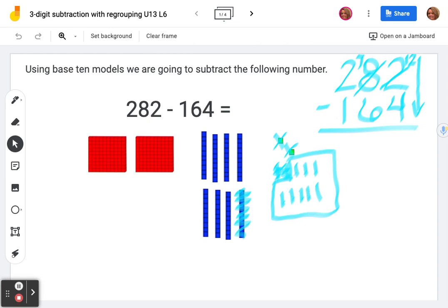Then we move to our tens place. We're taking away six tens. We already busted up one, so we leave that one alone. Now we're subtracting six more. One, two, three, four, five, six. How many do we have left? One.